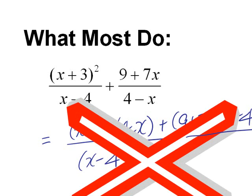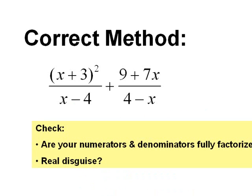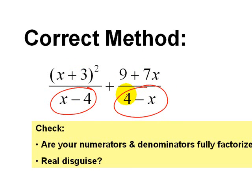So what must we do in order to get a correct answer? There are a few checks that you need to do. If you look at the numerators and the denominators, ask yourself: are they fully factorized? In this case, yes — so you don't have to do any factorizing work. The next thing you need to check: do you notice something about the denominators? Don't they look somewhat similar?